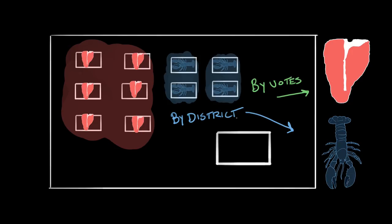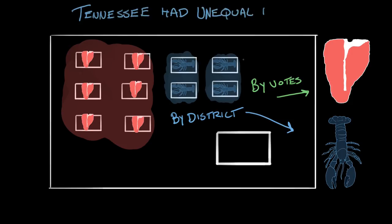This is exactly what Tennessee had done. They divided the state into districts to elect representatives, but some districts had only around 100 people, others had 1,000, some had 400, some had 10,000. Each district counted essentially as one — each had one vote — even though they weren't equal in terms of the number of people in the districts.